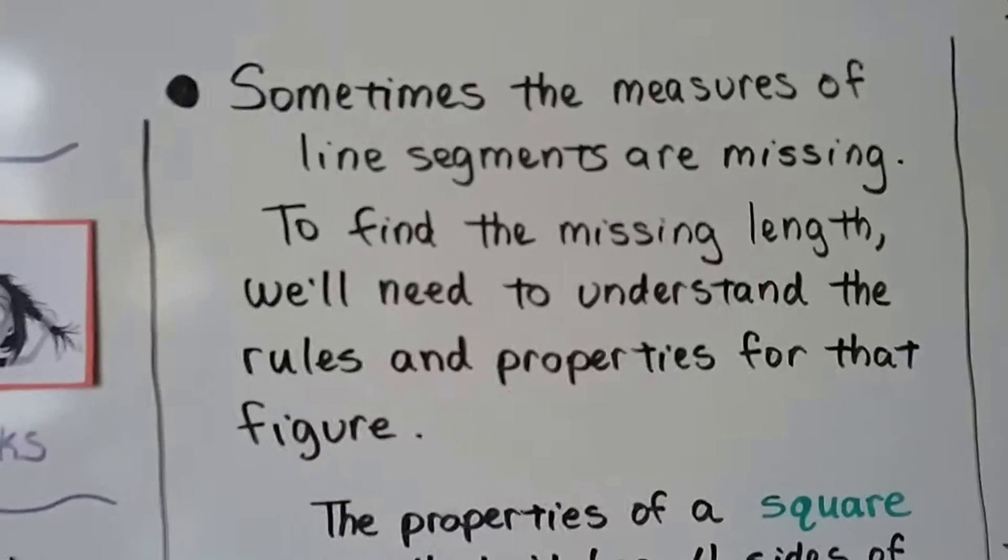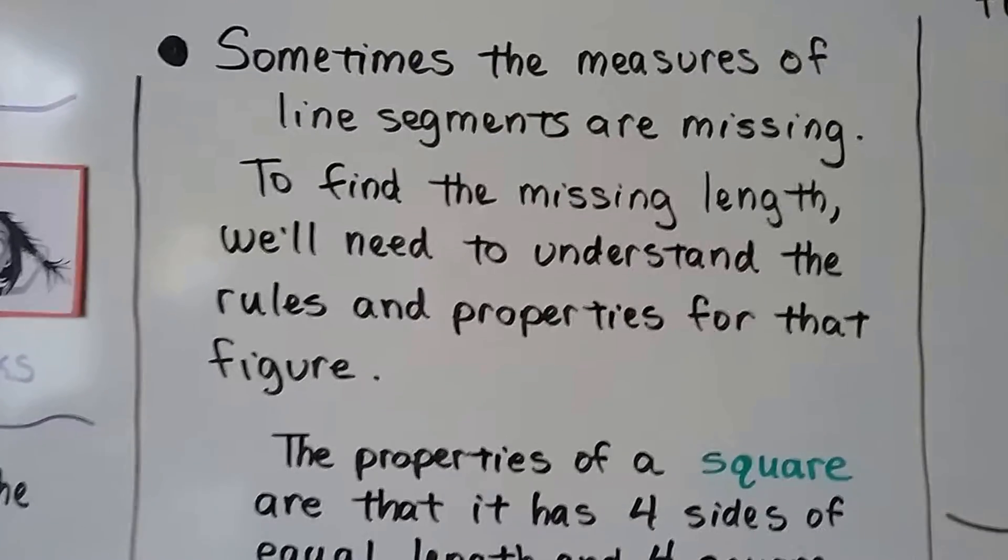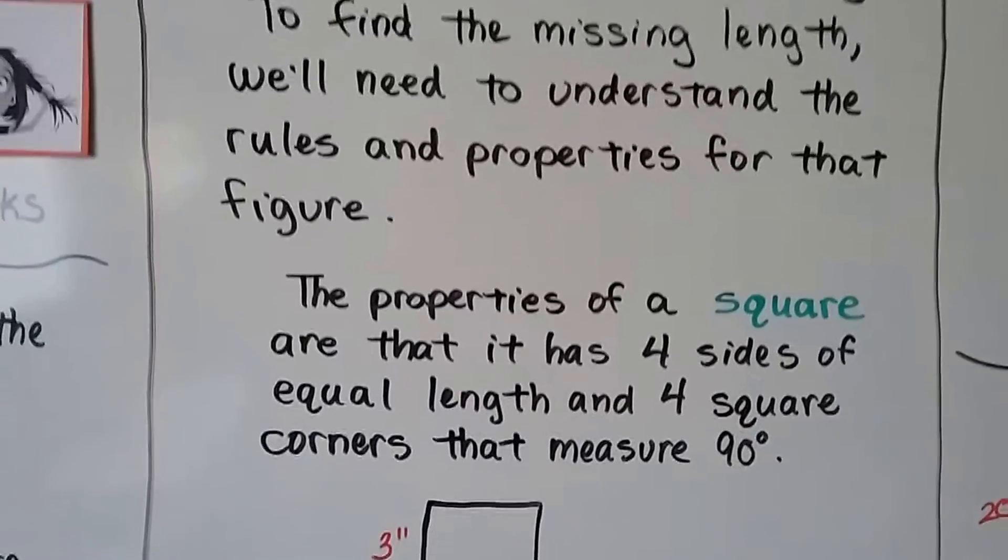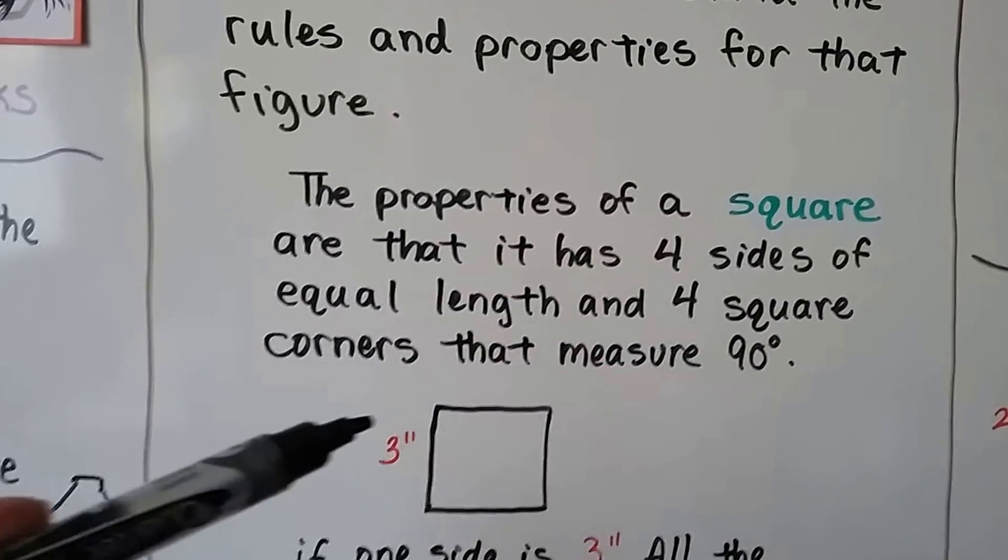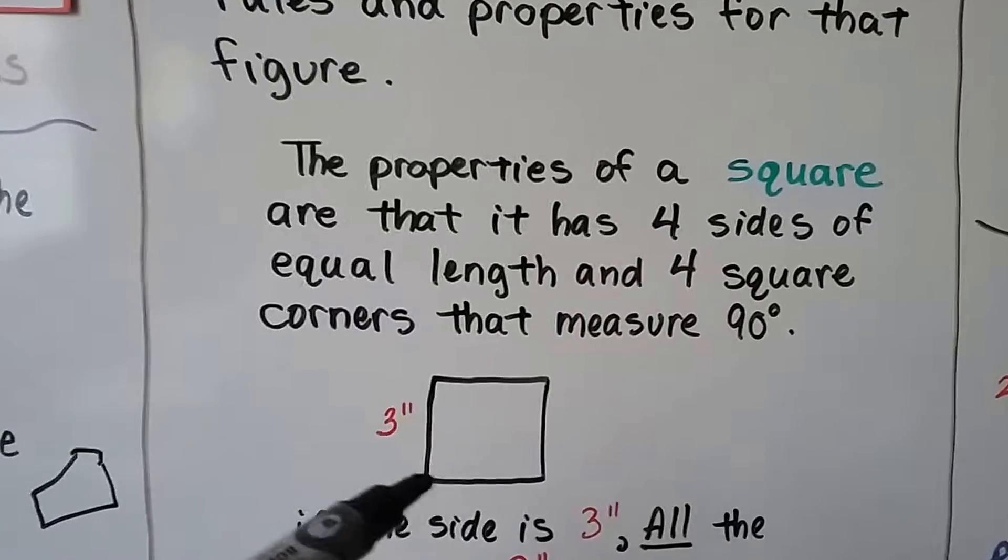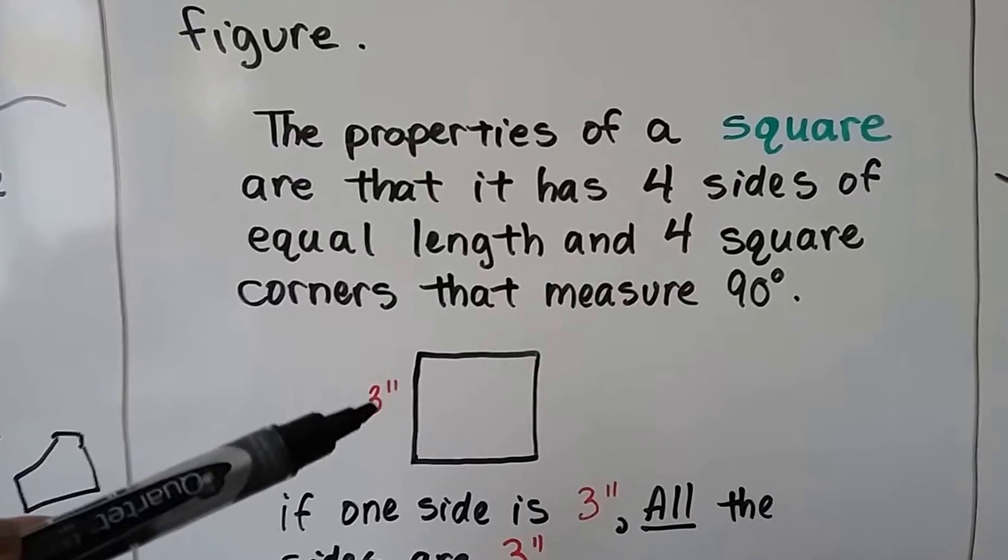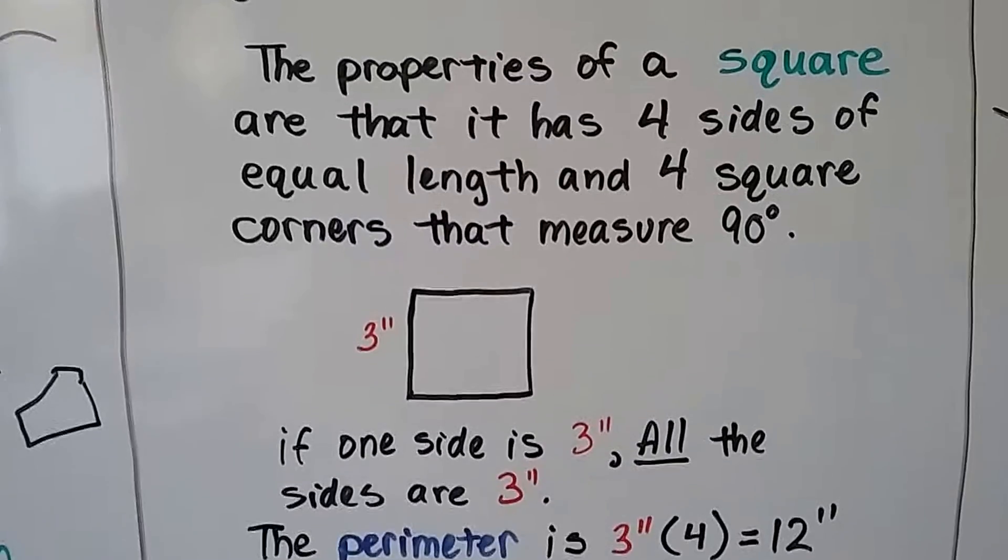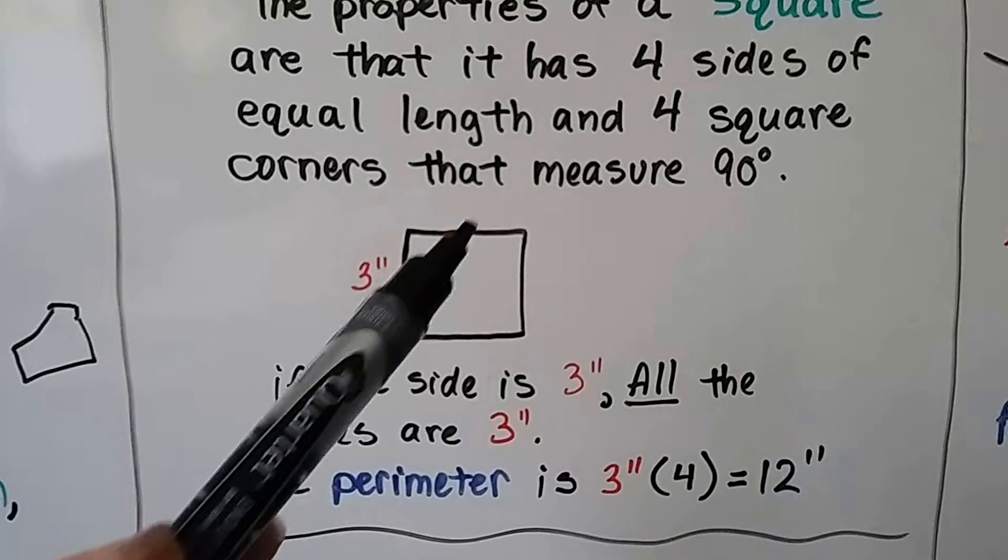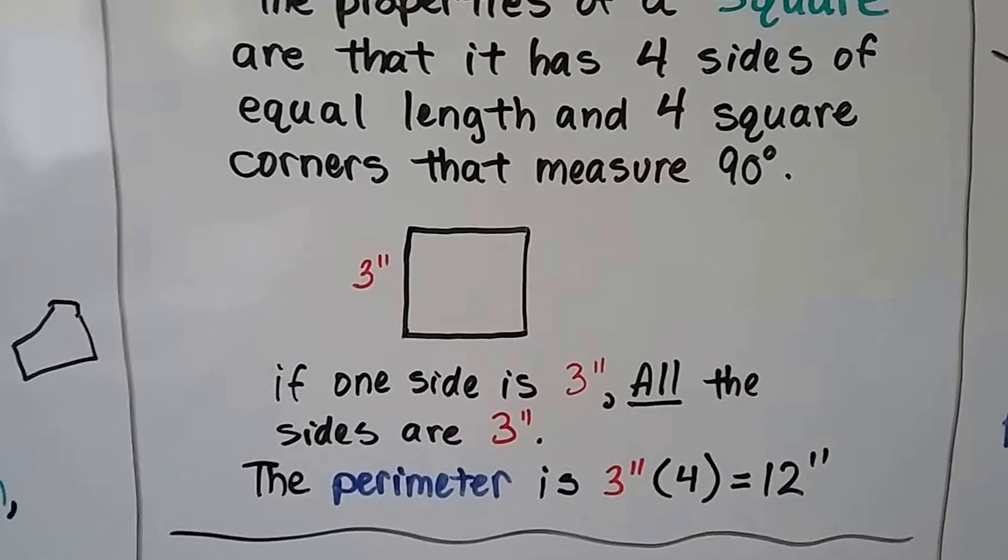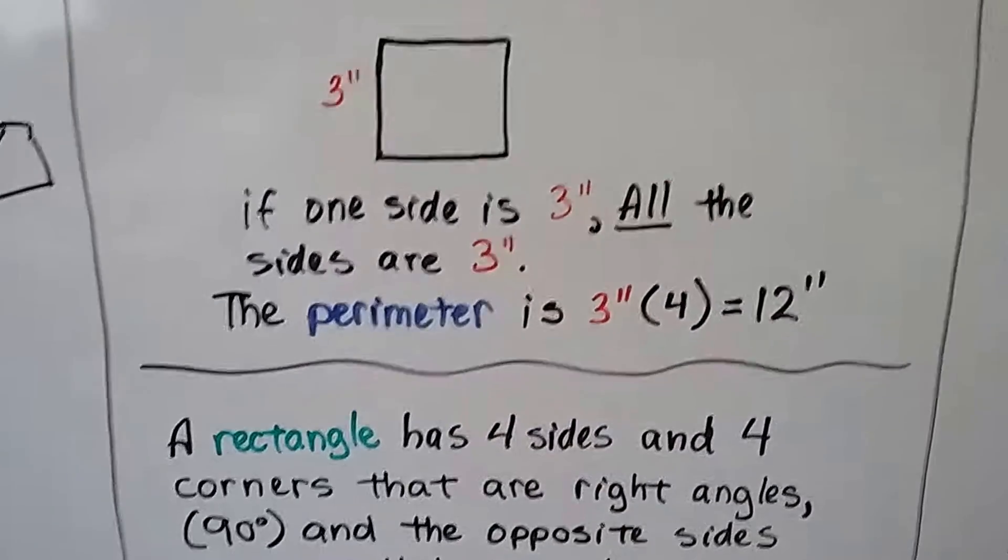Sometimes the measures of line segments are missing and to find the missing length we'll need to understand the rules and properties for that figure. So the properties of a square are that it has four sides of equal length and four square corners that measure 90 degrees. So it's got boxy corners. Well, if a square has four sides of equal length and we've only got three inches written on one of the sides, well, if one side is three inches, all the sides are three inches. That means the perimeter is three inches times four. It's 12 inches. The definition of a square helped us with that.